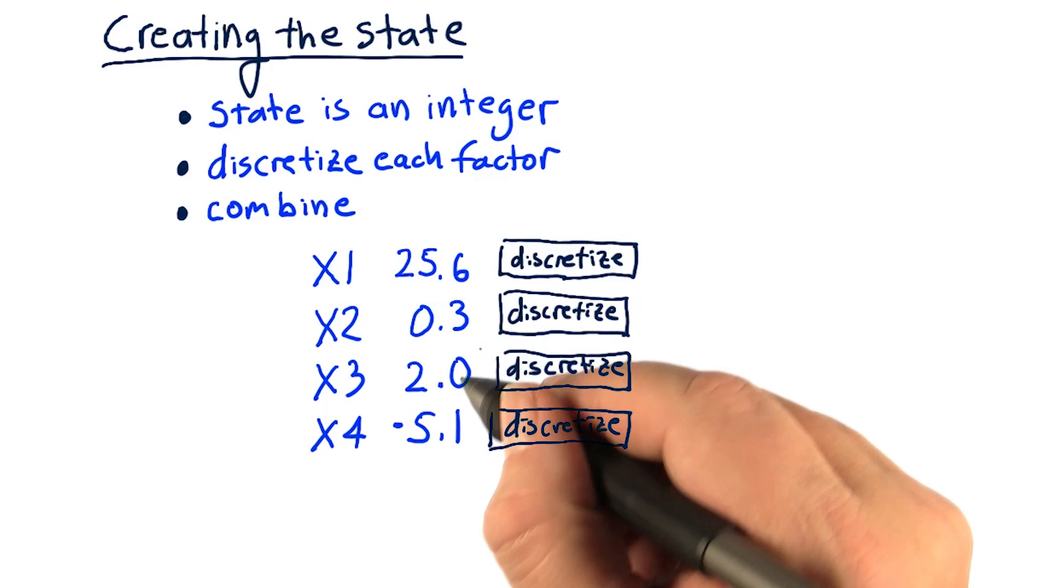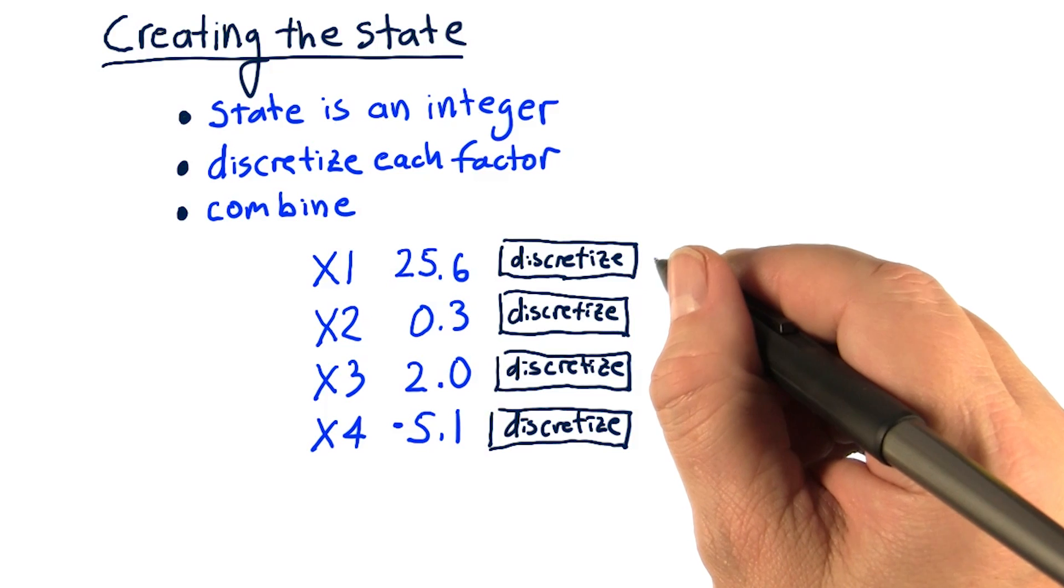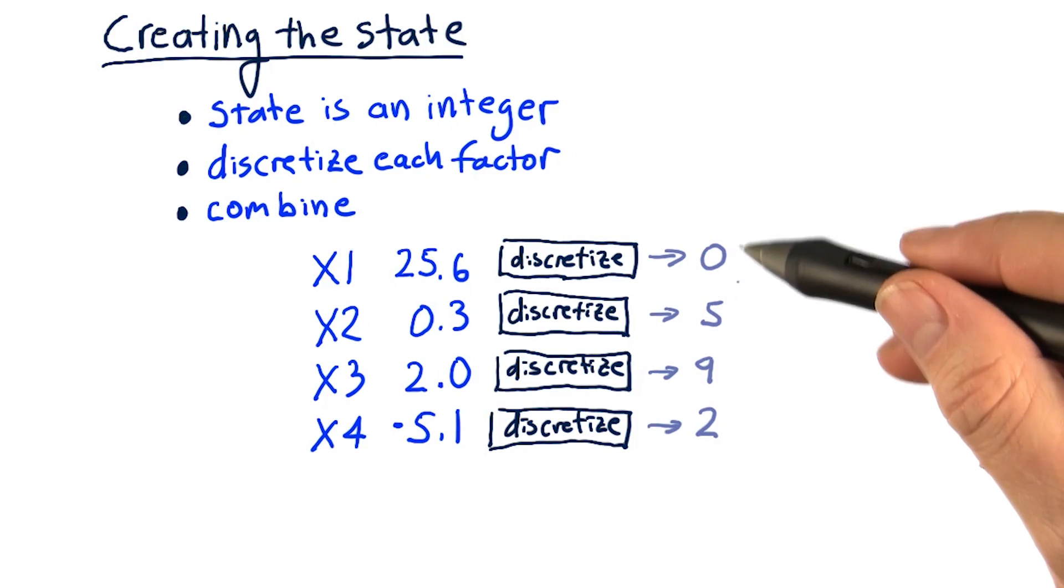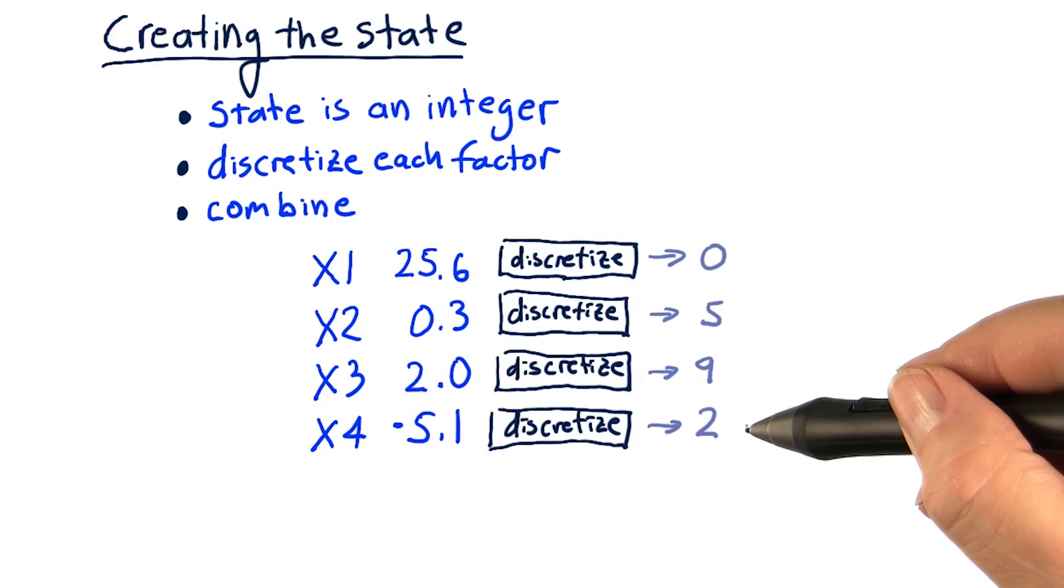We run each of these factors through their individual discretizers and we get an integer. I've happened to select integers between 0 and 9, but you can have larger ranges.